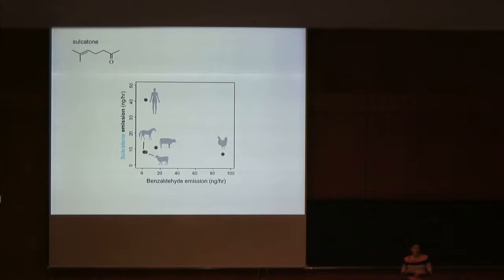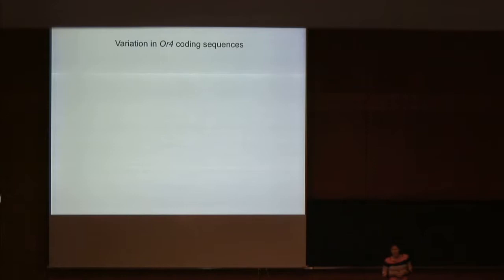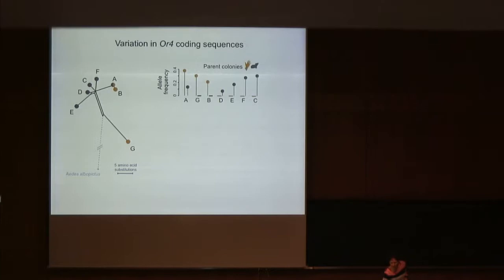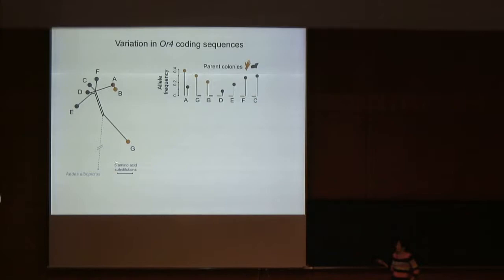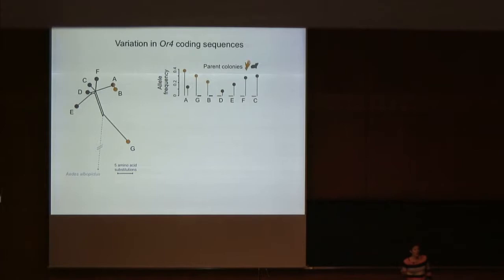In our original RNA-seq analysis where we found OR4 was more highly expressed in domestic mosquitoes, we also noticed that domestic mosquitoes tended to carry alleles of OR4 with altered coding sequences. We cloned cDNA from the antennae of both parent forest and domestic colonies and identified a diverse set of seven alleles differing in protein sequences. Based on a haplotype network of protein sequences, with a scale bar of five amino acid substitutions, this level of divergence is extreme — on the level of MHC variation in humans. On average two alleles differ at three percent of their amino acid sites, whereas typically populations of a species would differ at fewer than one percent of silent sites, let alone amino acid residues.